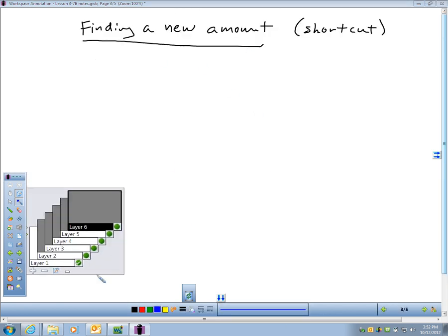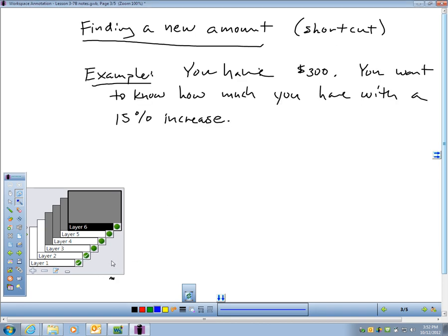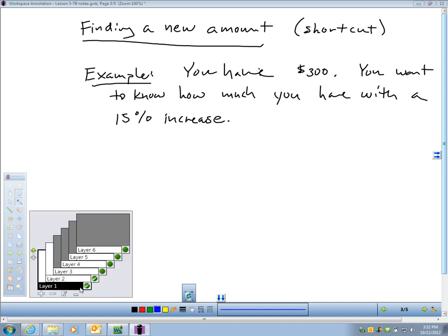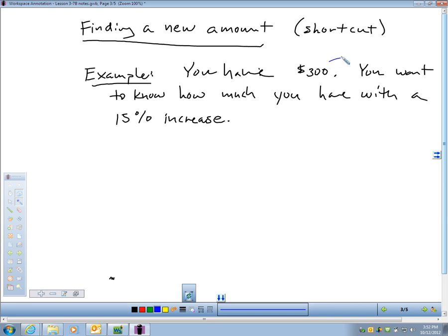Let's talk about finding a new amount like we did in question 7. There actually is a shortcut to that process. Here would be an example problem to show you. I'm going to do it the way we did it in problem 7, and then I can show you a shorter, quicker method. So let's say you have $300, and you want to know how much you have with a 15% increase. This is simple. I start with 100. That's my original amount. Let me turn my layer on here. I start with 100, and that's my original amount. It would be good if I can spell. Here we go. Original amount. And this is my percent increase.